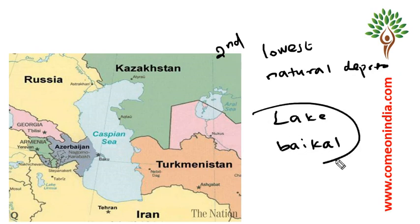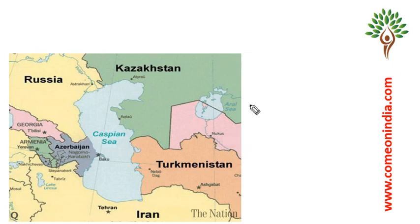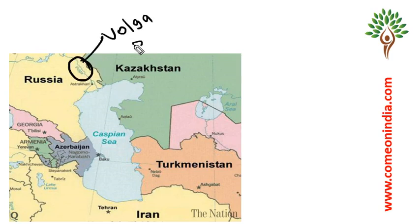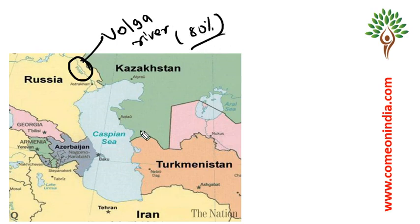The important rivers flowing into the Caspian Sea are: the largest is the Volga River, and other important rivers are the Ural River and the Kura River.